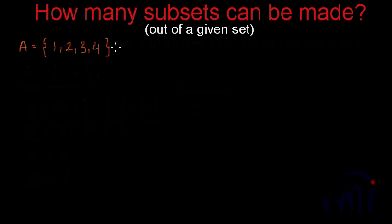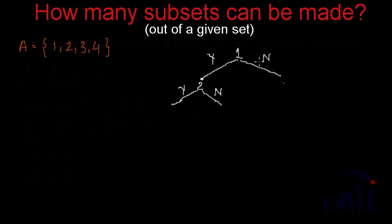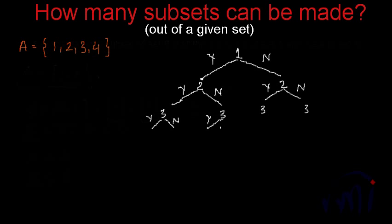Let's take set A with elements 1, 2, 3, and 4. For each of these elements, there are two possibilities: they can be present in the subset or they may not appear in that particular subset. So for element 1, there are two possibilities — it can be there or it is not there. Then for element 2, whether 1 is present or not, there are again two possibilities. For element 3, for each previous possibility, there are again two possibilities — 3 is there or 3 is not there.